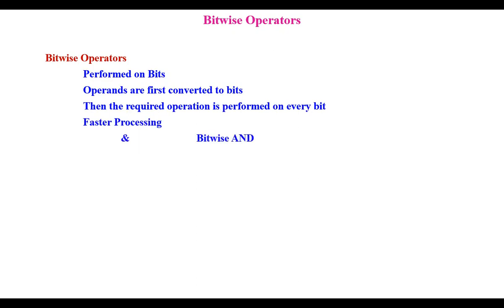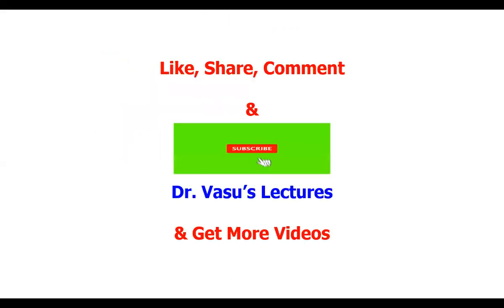Coming to the types, we have the bitwise AND operator, bitwise OR operator, and exclusive OR operator. These are three types of operators we have. Let us see how they perform.